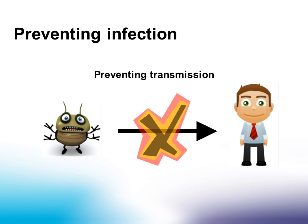The second method to break the chain of infection is preventing transmission. This involves the use of standard and transmission-based precautions, which decrease the risk of transmission of organisms in healthcare from recognised and unrecognised sources.